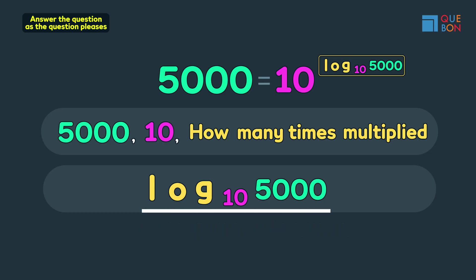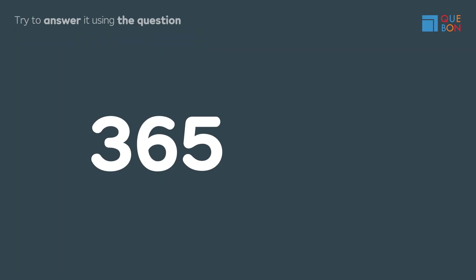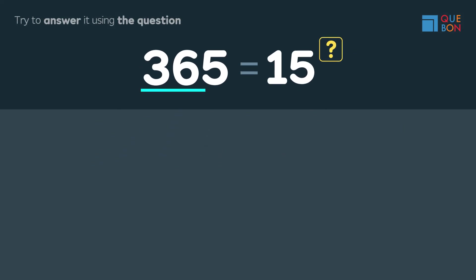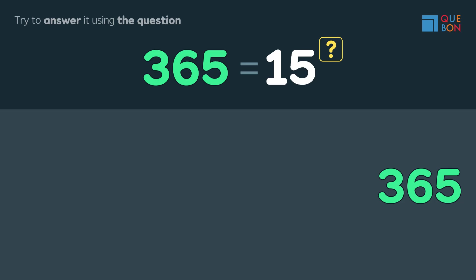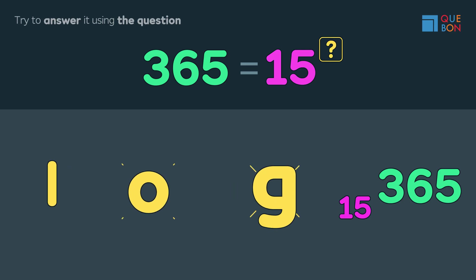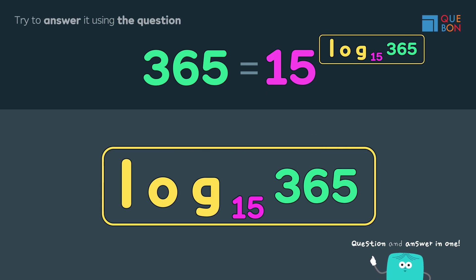We should be able to answer the question right away. Five thousand is ten to the what power? We write: log base ten of five thousand. Let's look at the next example: 365 is 15 multiplied by itself how many times? Written in answer form, we simply write log base 15 of 365. Question and answer in one — just like shampoo and conditioner combined.